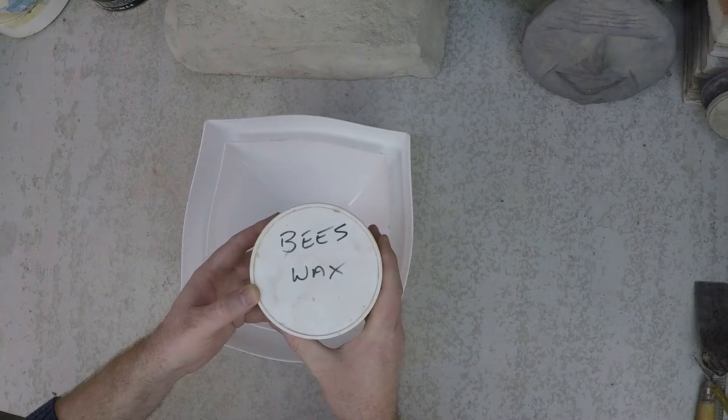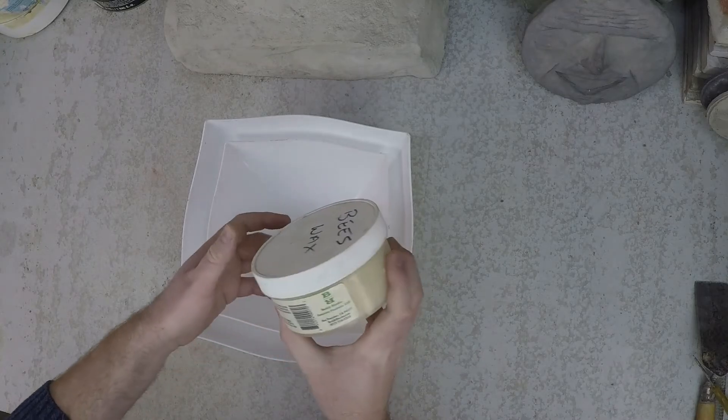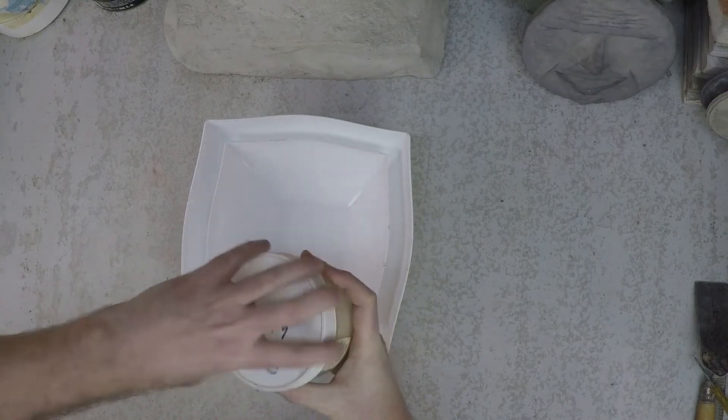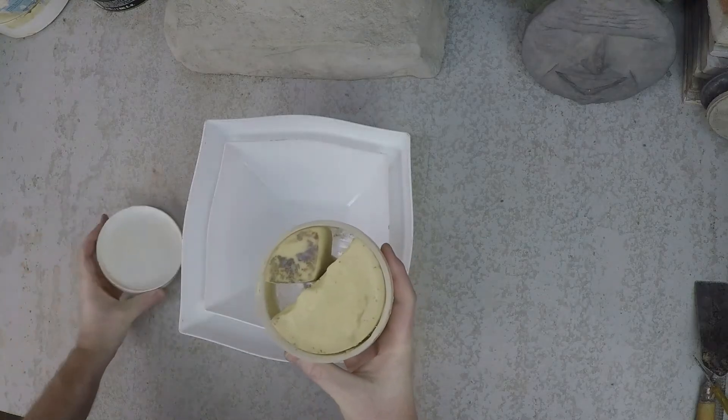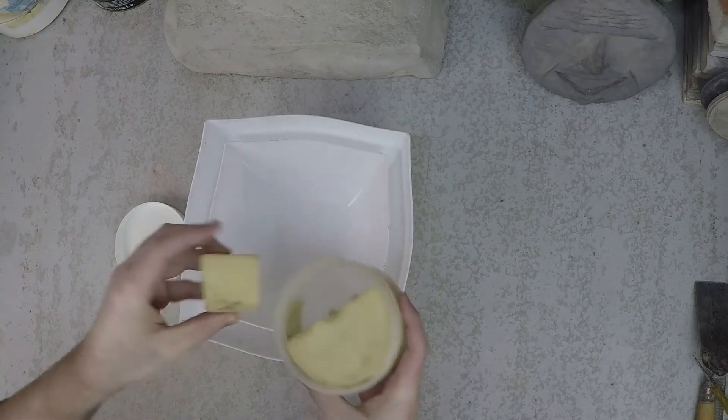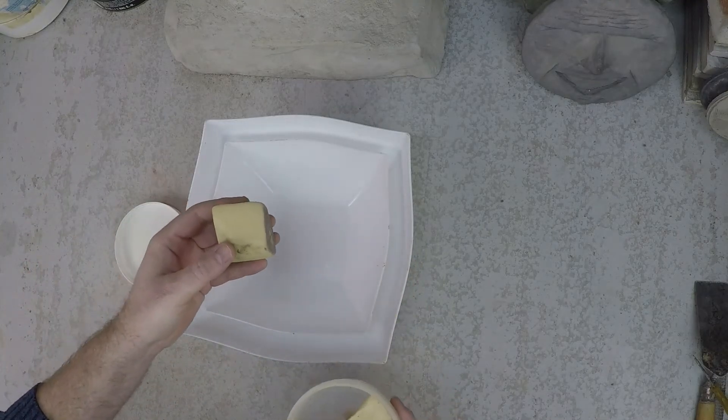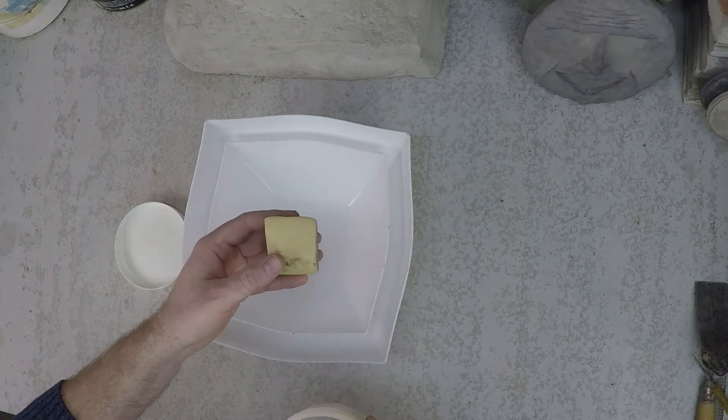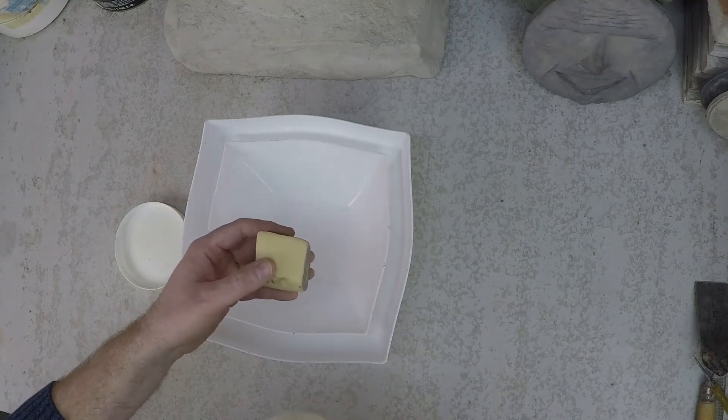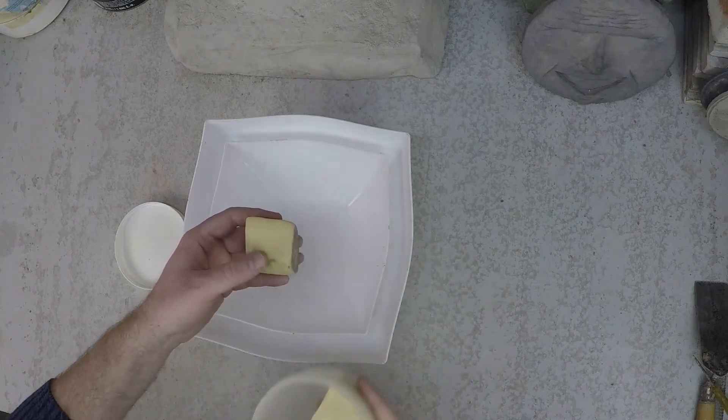One of the best release agents that I've used for casting concrete is beeswax. One of the problems with casting concrete is that concrete's porous, and when you pour your molding rubber onto it, it kind of absorbs right into the concrete and that's a problem because you're never going to demold that.